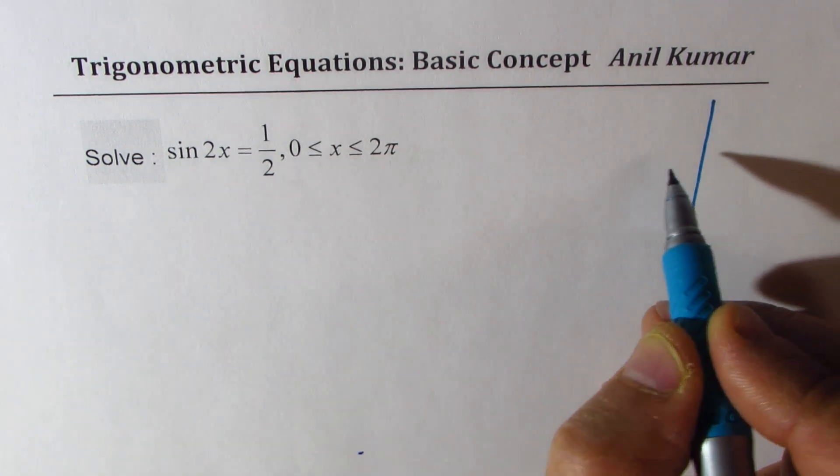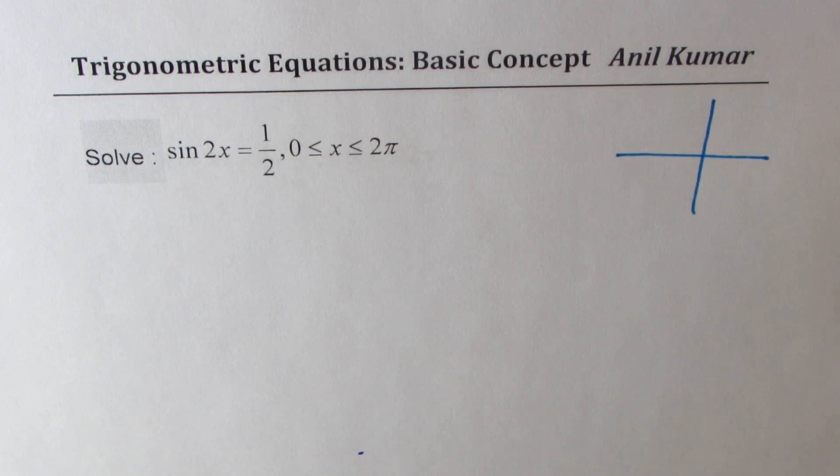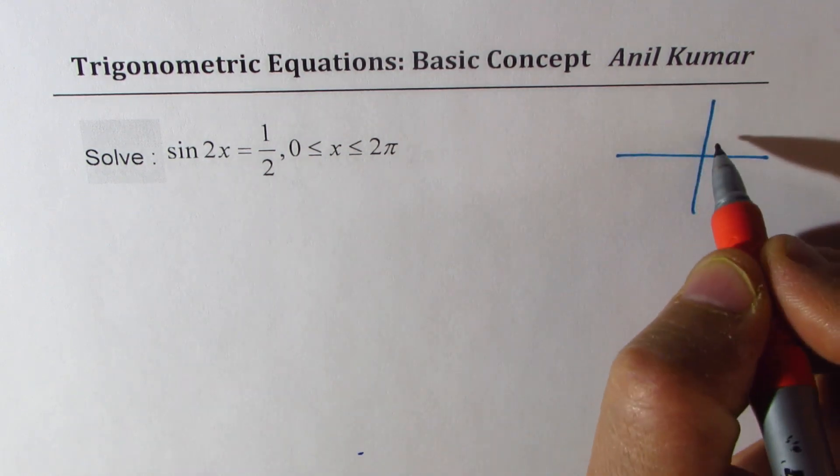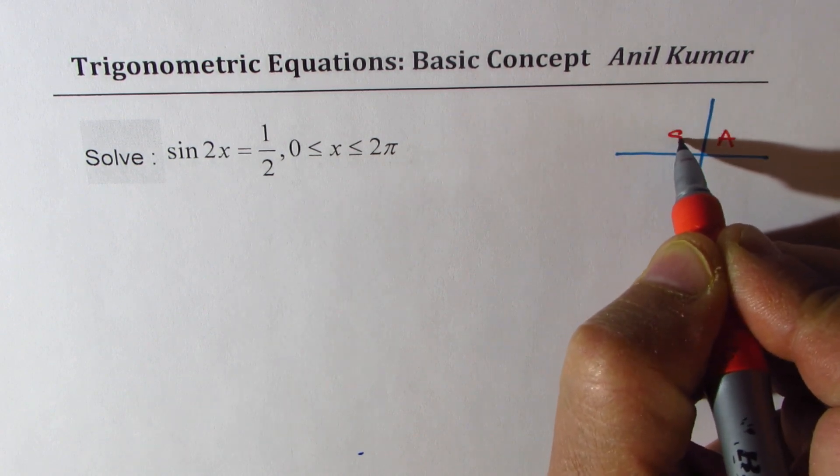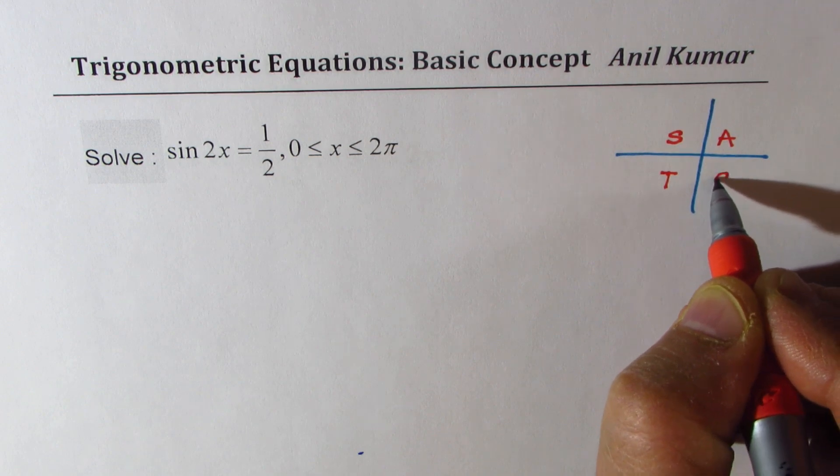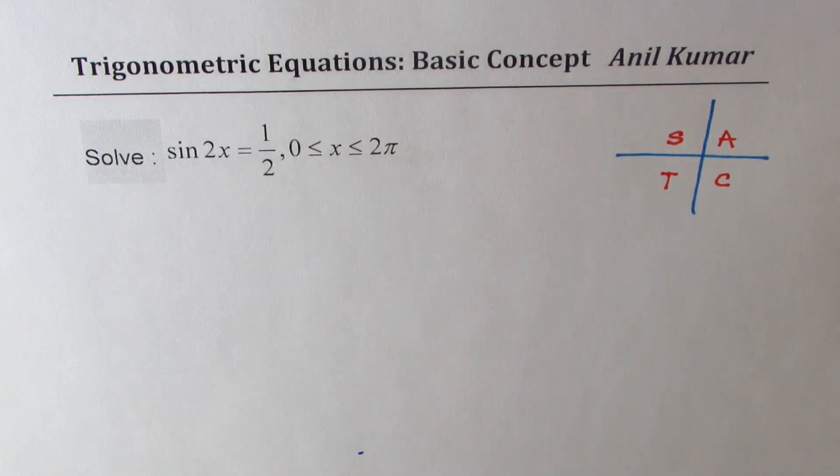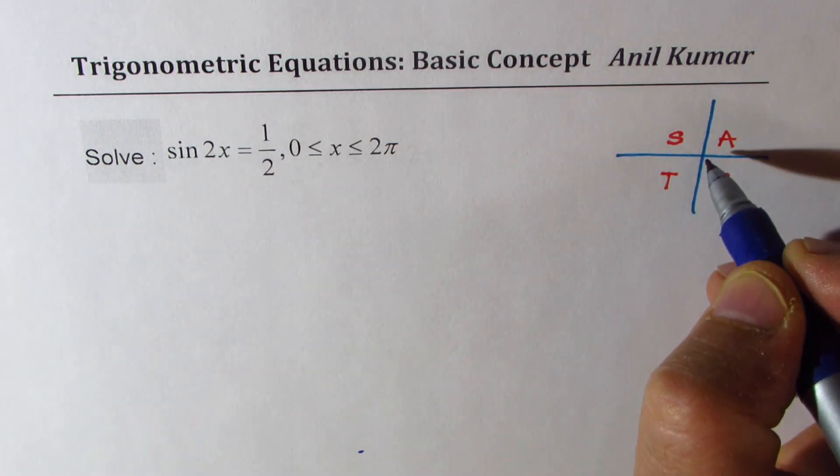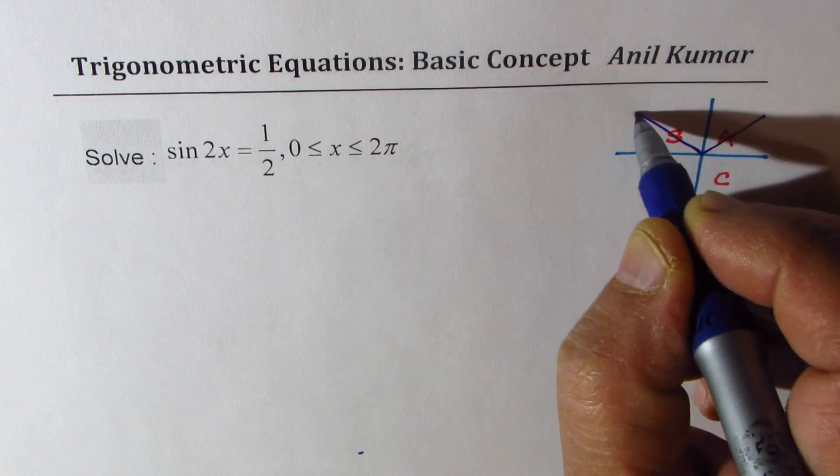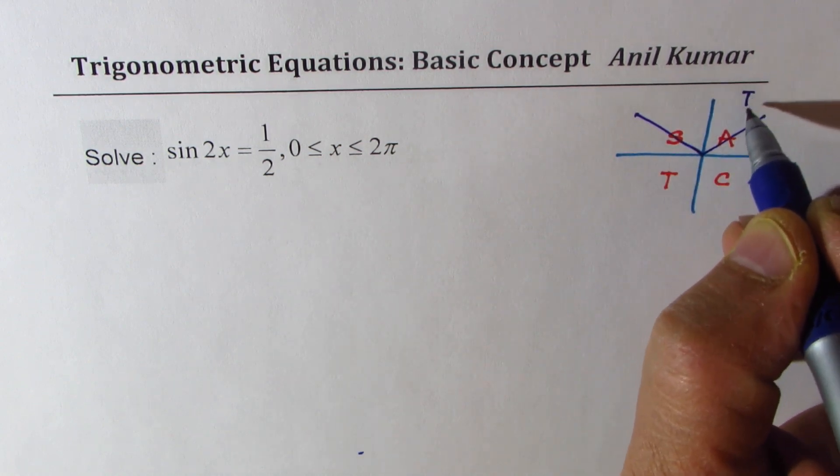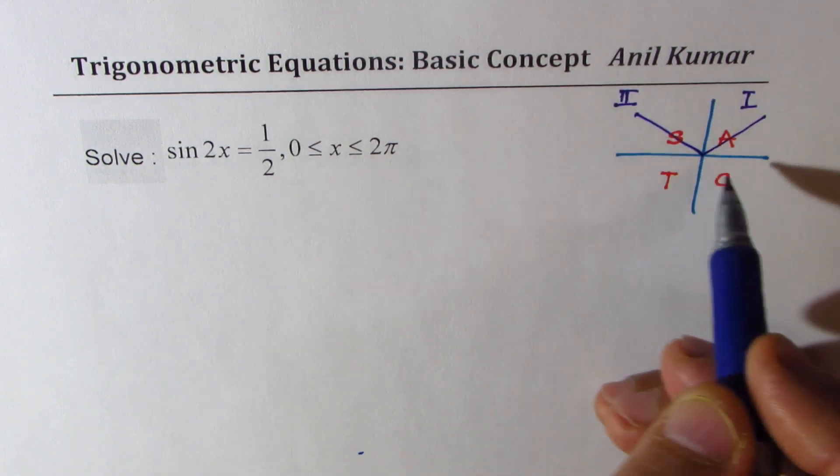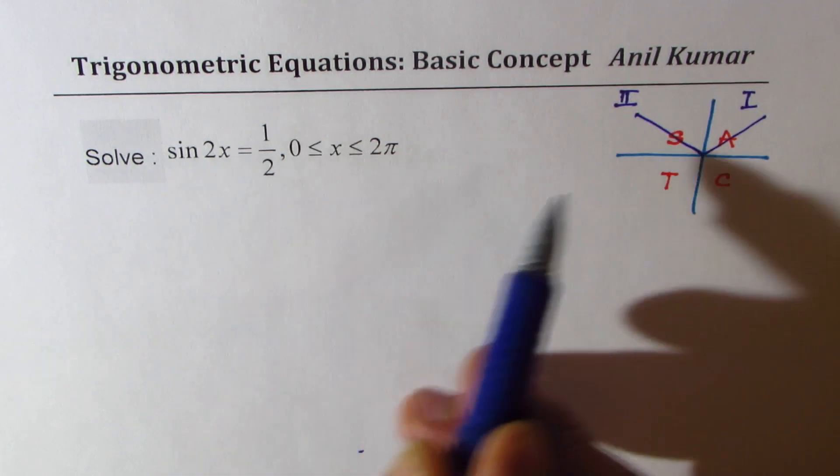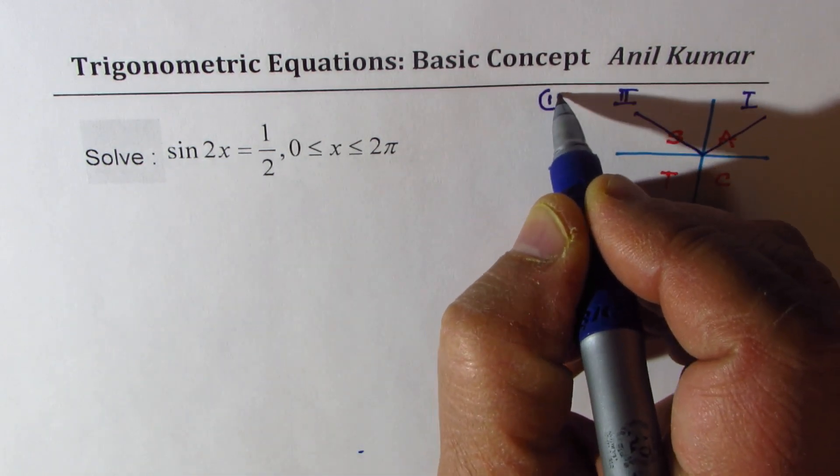We're looking for sine to be positive. That means we're looking for solutions in two quadrants. All are positive in quadrant 1, sine is positive in quadrant 2, tan is positive in quadrant 3, and cosine is positive in quadrant 4. So when we are given that sine 2x is positive, we have two solutions in quadrant 1 and also in quadrant 2 where sine is positive.